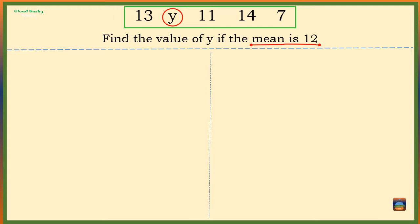Now we know that to find the mean, we have to add all the numbers and divide the total by how many numbers were added. So we're going to add 13 + y + 11 + 14 + 7, and if we divide this by 5, we should get the mean, which is 12.